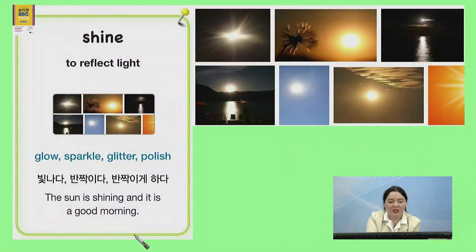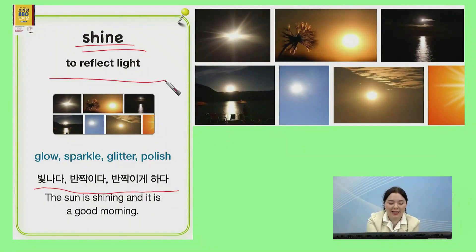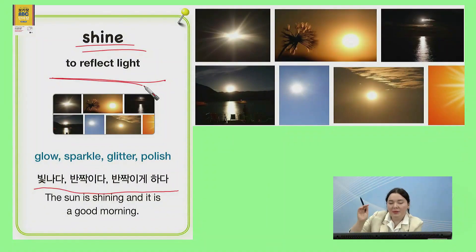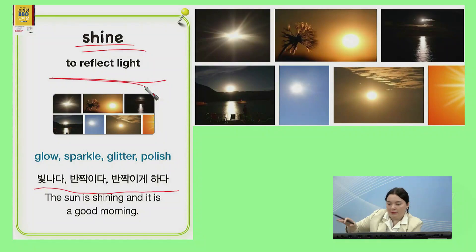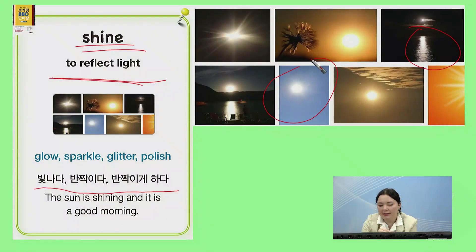The next word is shine. Shine. 한국말로는 빛나다, 반짝이다, 반짝이게 하다. 영어로 설명하면, to reflect light. 그 햇빛이나 어떤 빛을 다시 빛나는 거예요. You can see the moon is shining on the water. The sun is shining through the sky. Shining is when that light is going outwards — 빛나는 거예요.